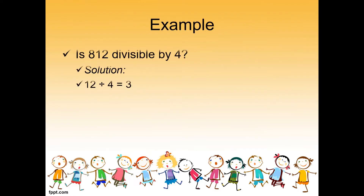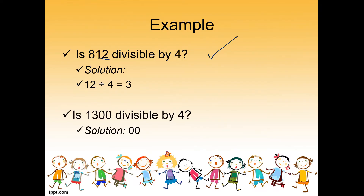So let's take an example. Is 812 divisible by 4? We look at the last two digits: 12. So 12 divided by 4 equals 3 with no remainder, meaning 812 is divisible by 4. The common factors of 812 include 4 and 3, and also 2. Second example: is 1300 divisible by 4? The last two digits of 1300 are 00, so automatically it is divisible by 4.